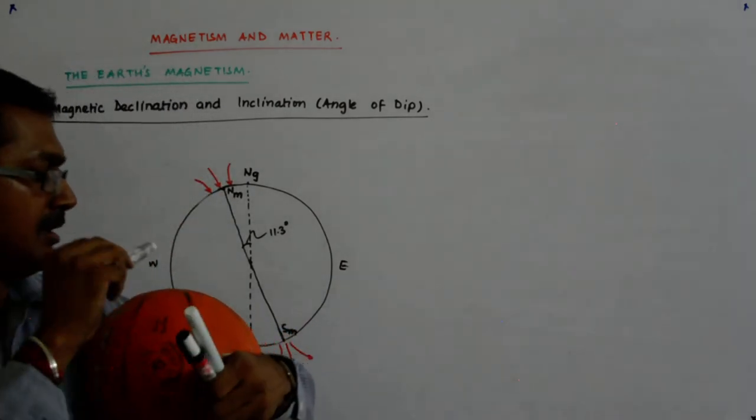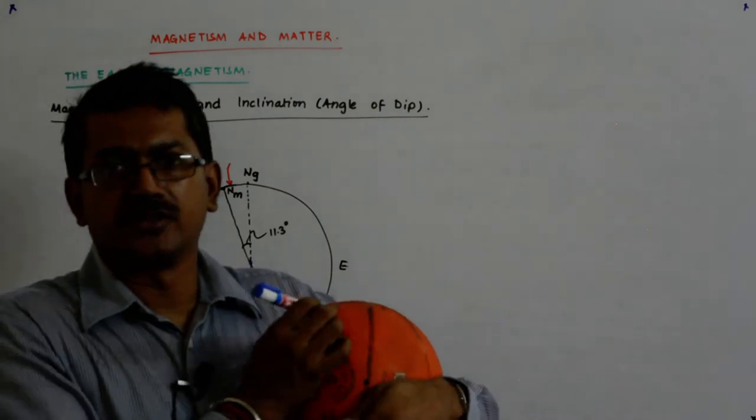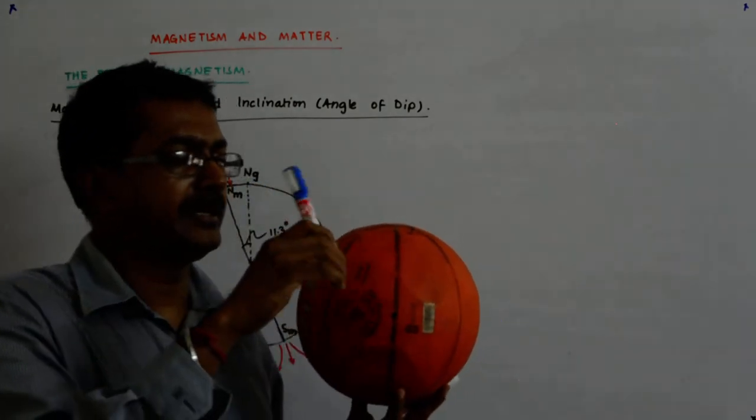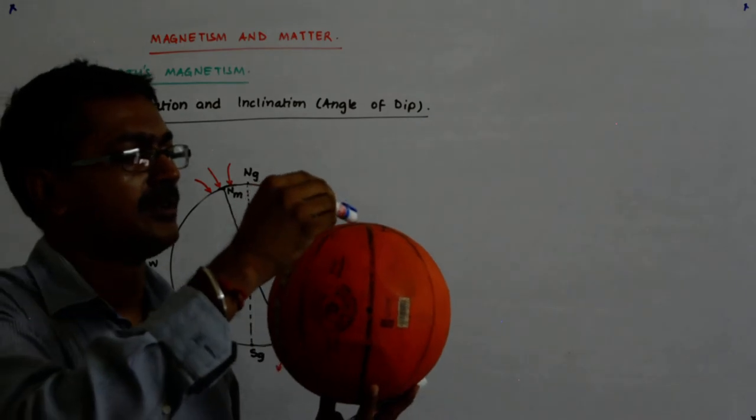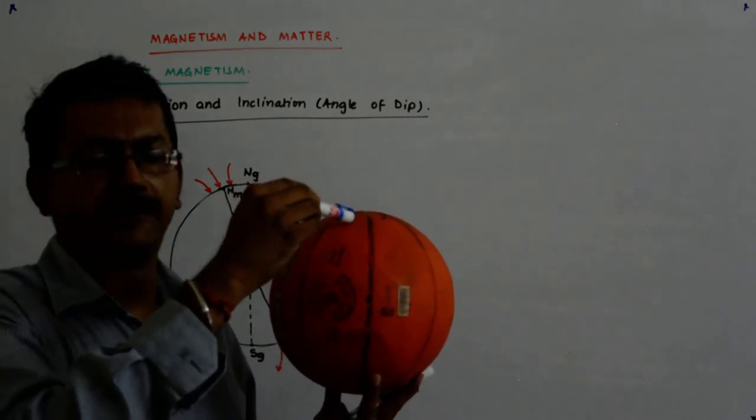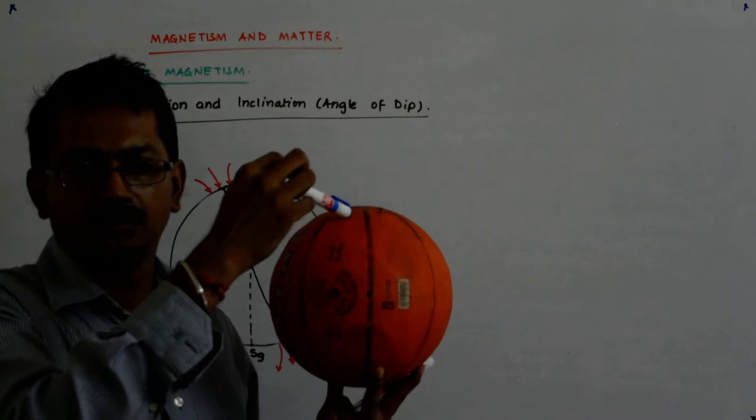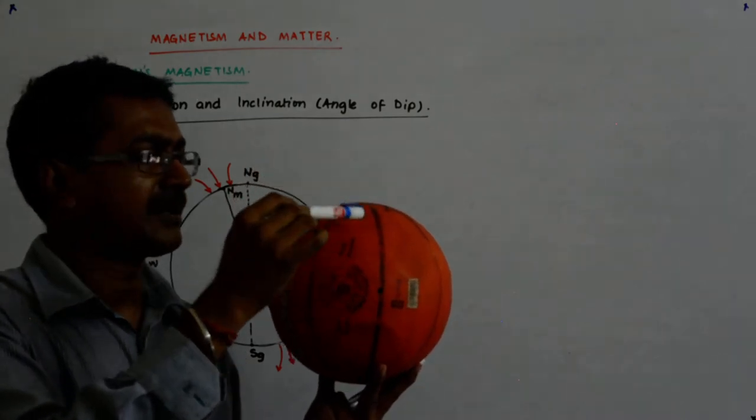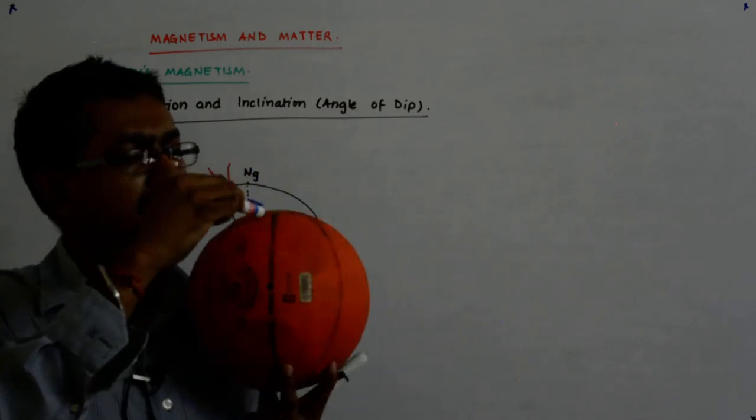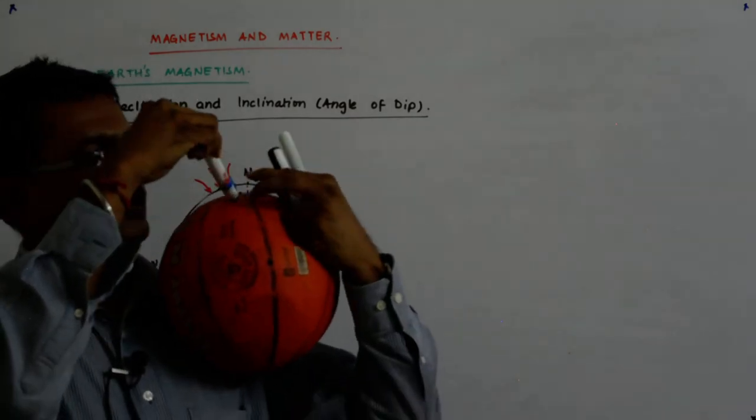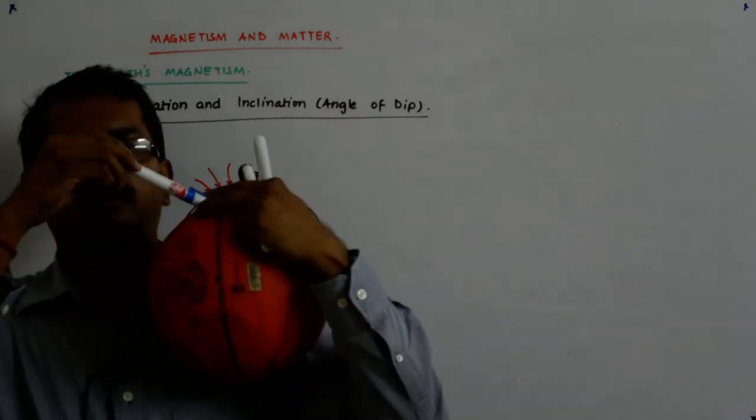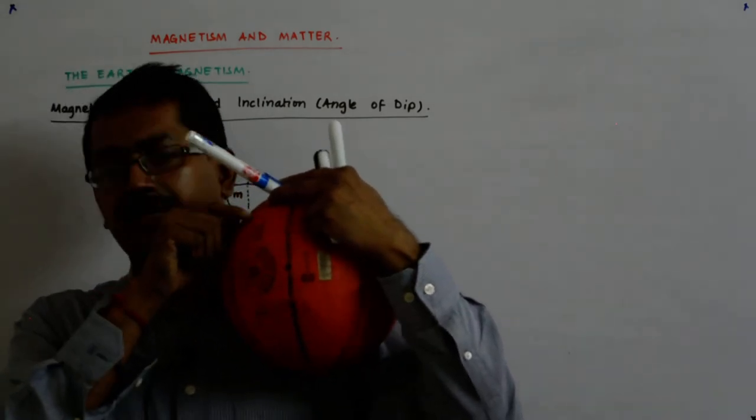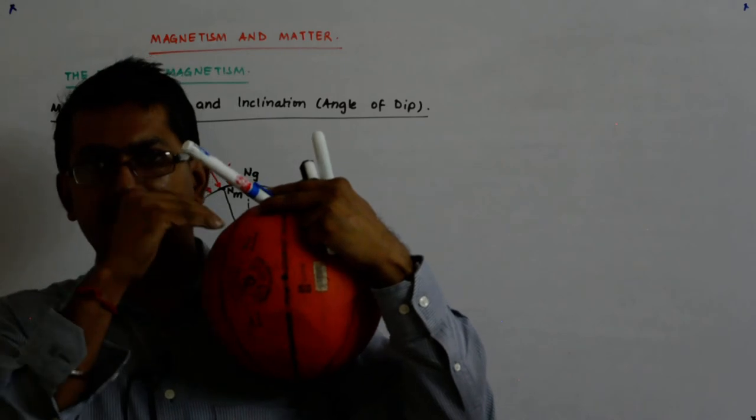So maybe it will be sort of dipping like that. It is sort of dipping like this, making some angle here. And what do we call this angle? If you see it like that, this angle will be called I. This is the angle of dip. This is how your horizontally hinged magnetic compass dips or rises.